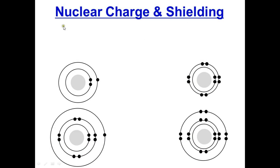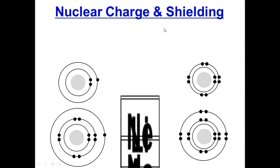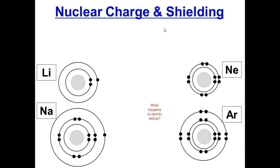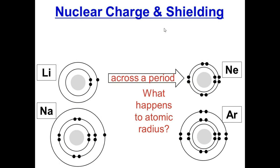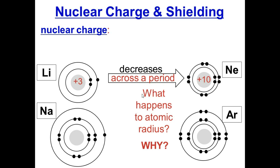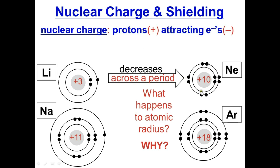Here's some elements on the periodic table. As we move across a period, the atomic radius decreases. The reason it decreases is because the nuclear charge increases — more protons are attracting electrons. These protons pull stronger as we move from left to right in a period.